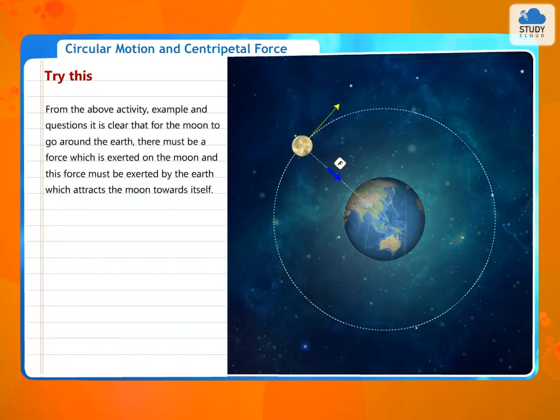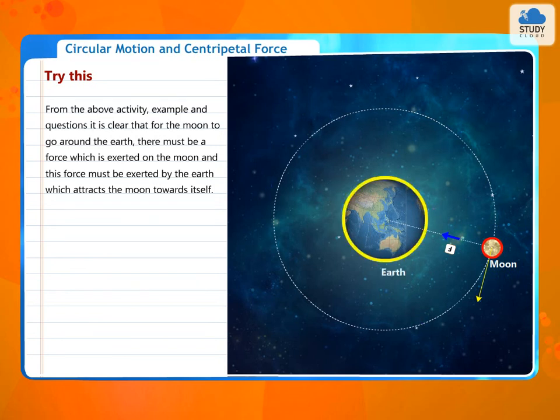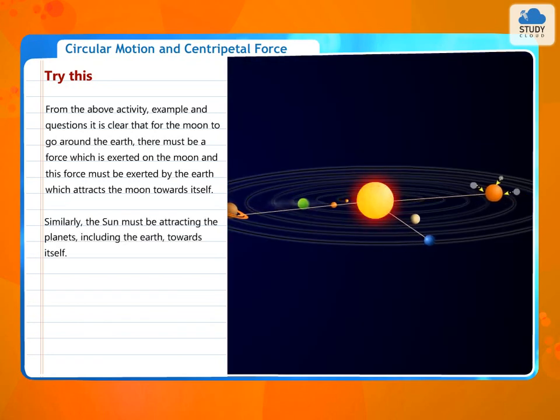From the above activity, example and questions, it is clear that for the moon to go around the earth, there must be a force which is exerted on the moon and this force must be exerted by the earth which attracts the moon towards itself. Similarly, the sun must be attracting the planets, including the earth, towards itself.